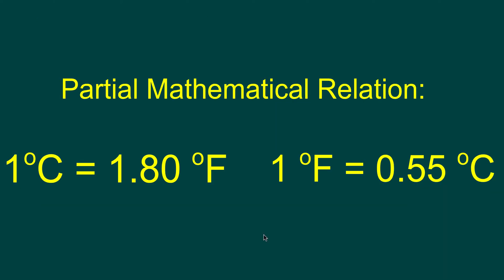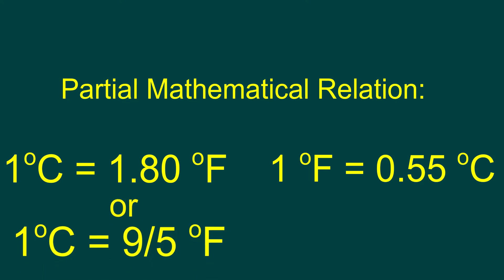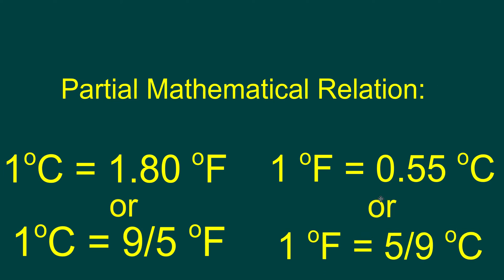Here is part of the mathematical relationship between Celsius and Fahrenheit. One degree Celsius is equivalent to 1.80 degrees Fahrenheit. One degree Fahrenheit is equal to 0.55 degrees Celsius. Or, if we want to use fractions like they do in quite a few calculations, one degree Celsius is equivalent to nine-fifths of a degree Fahrenheit, and one degree Fahrenheit is equivalent to five-ninths of a degree Celsius.